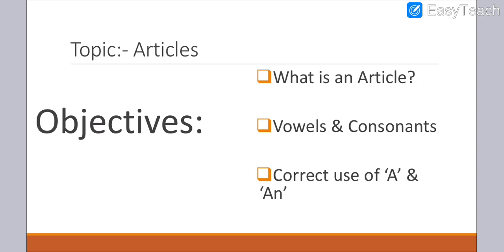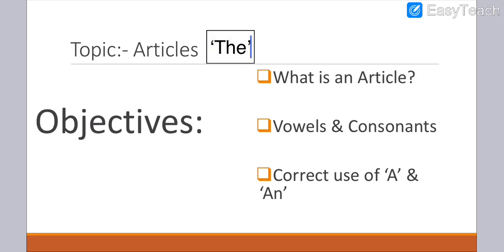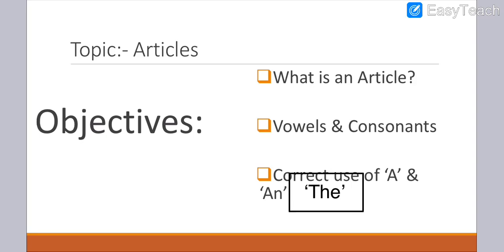Students, as you all know, we always first go through the objectives of the lesson. The objectives for today are the same as yesterday: what is an article, and we are going to revise what vowels and consonants are and which alphabets are included in each. Additionally, today we are going to learn the correct use of article 'the' as well. So these are our objectives for today.